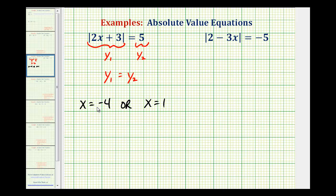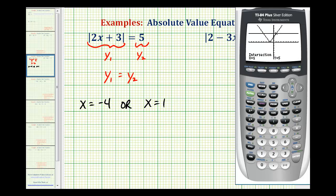So our solutions are x equals negative 4, or x equals 1. And hopefully graphically you can see now why many absolute value equations have two solutions. If you have a v-shaped graph and a horizontal line, many times they will intersect in two points, giving us two solutions.